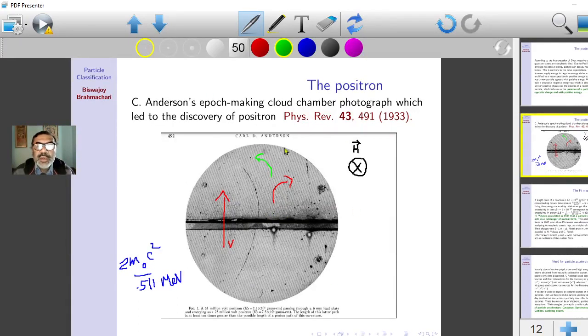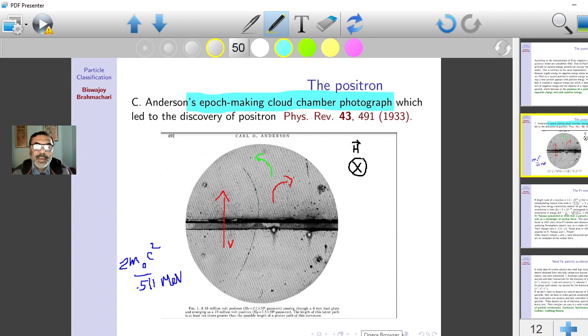This is the epoch-making cloud chamber photograph, because it changed the understanding of particles and antiparticles—the first evidence of antimatter, which is a very exotic type of matter. Now we know that indeed there exists antimatter in the universe.